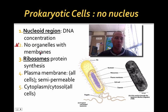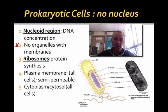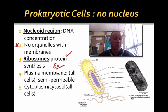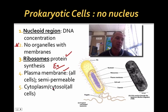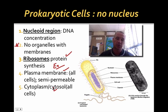No membrane-bound organelles — and you'll see a lot of those in eukaryotic cells. Something prokaryotes do have in common with eukaryotic cells is ribosomes. They also have a plasma membrane and a cytoplasm or cytosol, which eukaryotic cells also have. So these three things — ribosomes, plasma membrane, and cytoplasm — all cells have or are composed of.